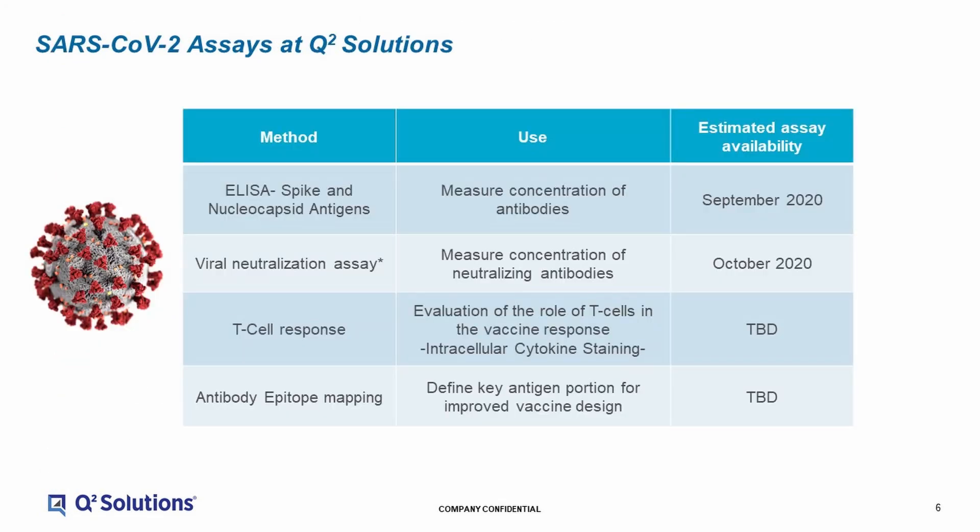Vaccine immunogenicity testing is based on our Center of Vaccine Excellence, which is located in San Juan Capistrano, California. This slide gives you an overview of the different methodologies that we have available for SARS-CoV-2 vaccine evaluations and the estimated timing for the assays to be available for clinical trials.